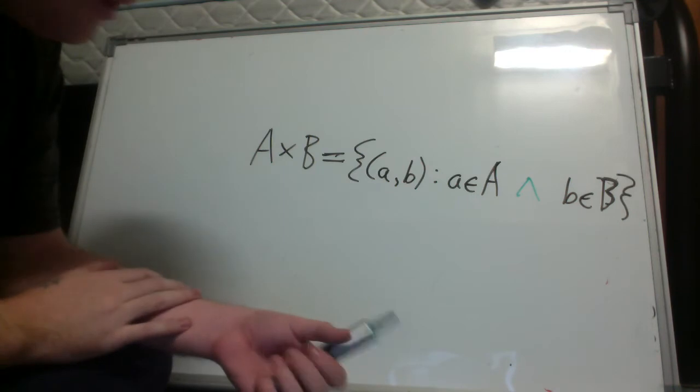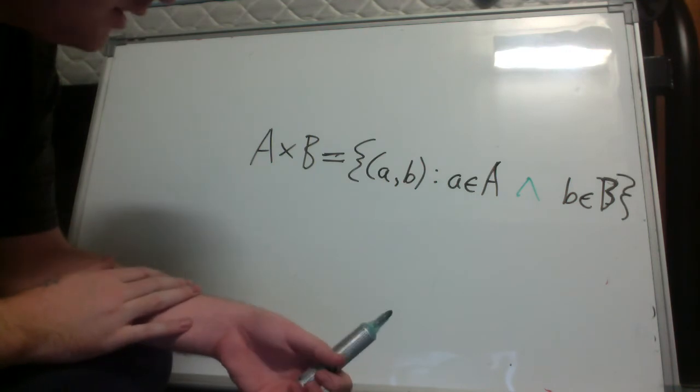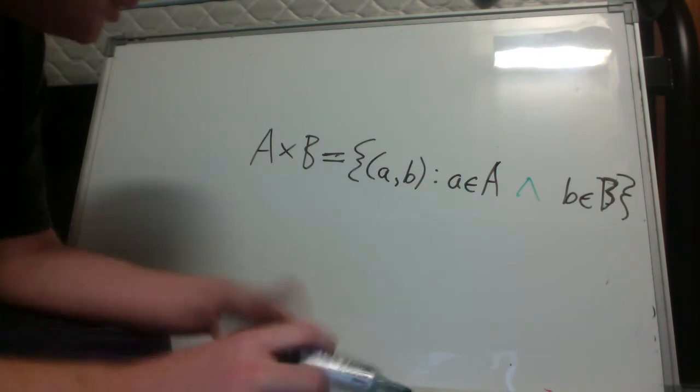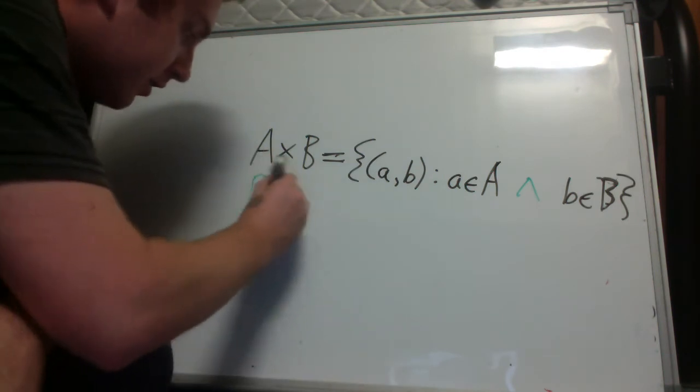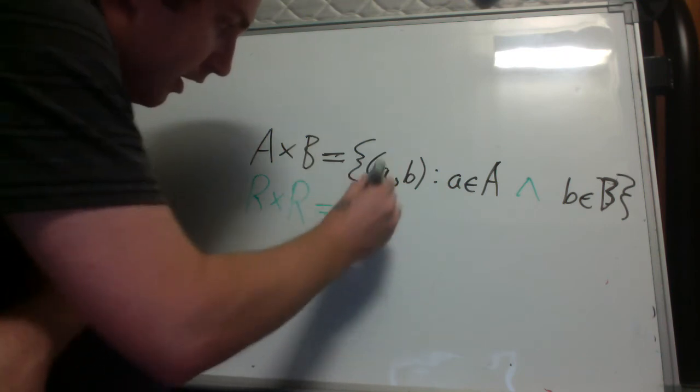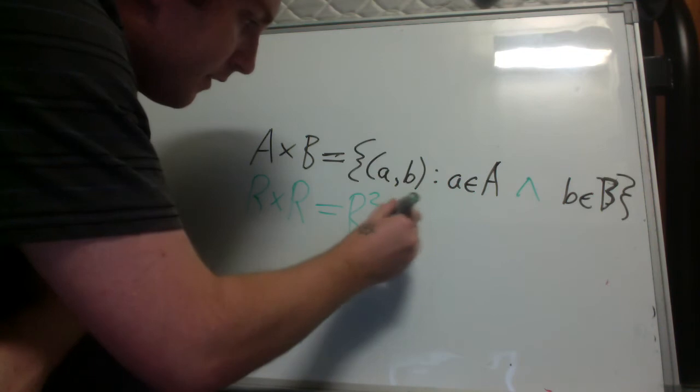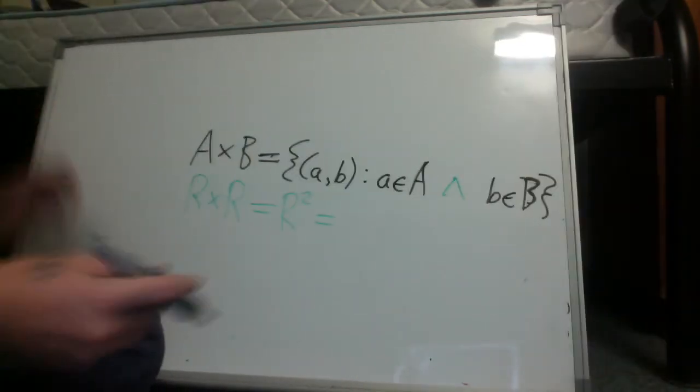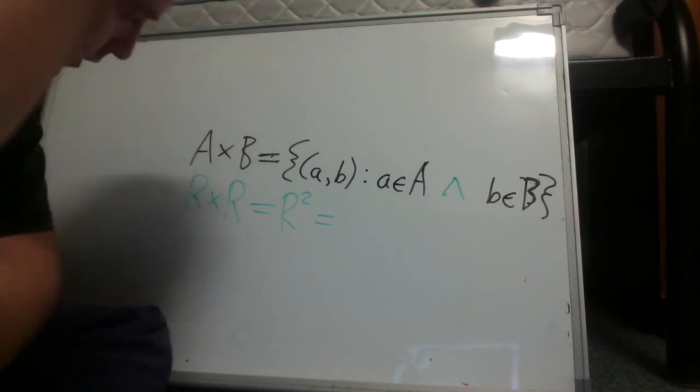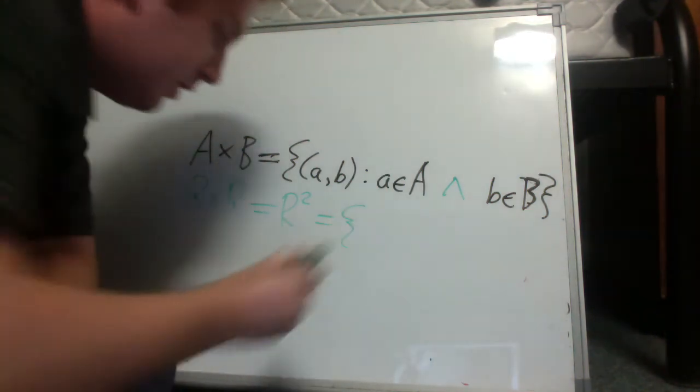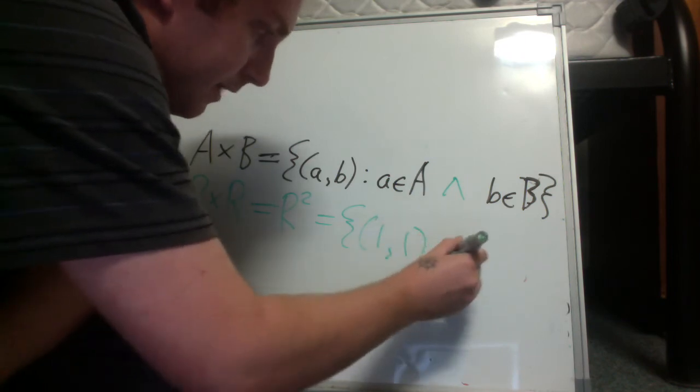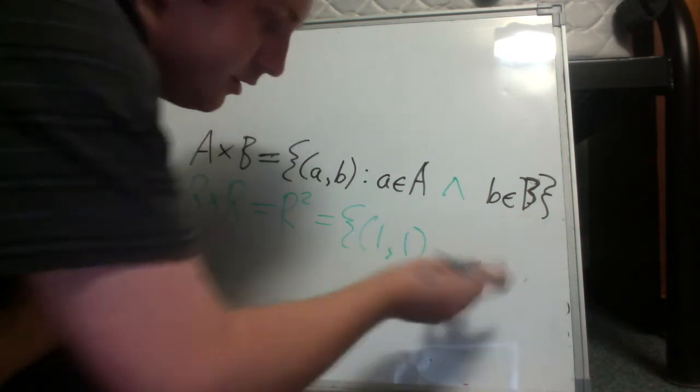So now that we've defined the Cartesian product, let's think of the Cartesian product of the real numbers with themselves. So we have r cross r, which we write r squared. It's the set of all ordered pairs of real numbers. So an example would be one and one.